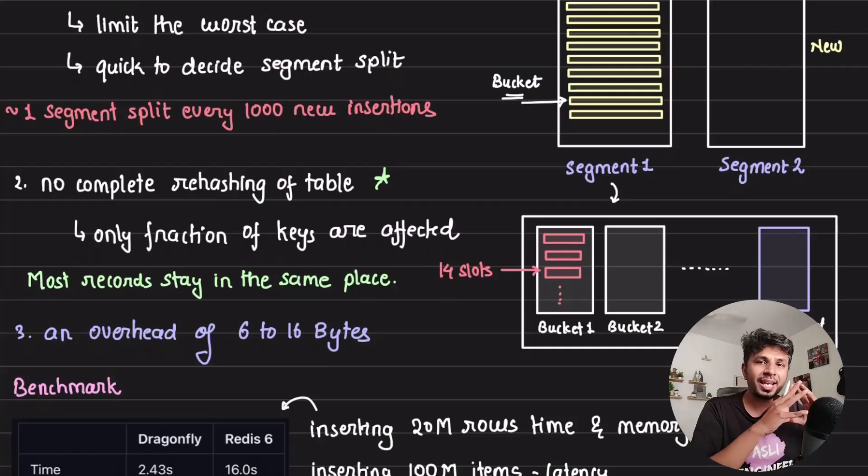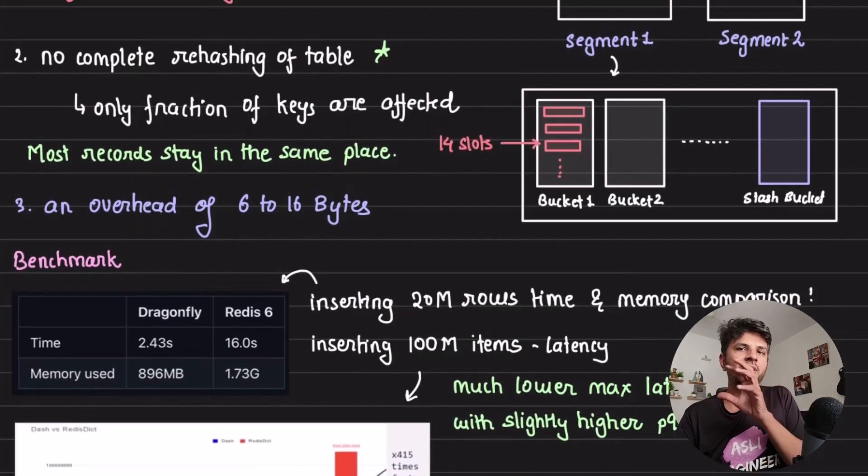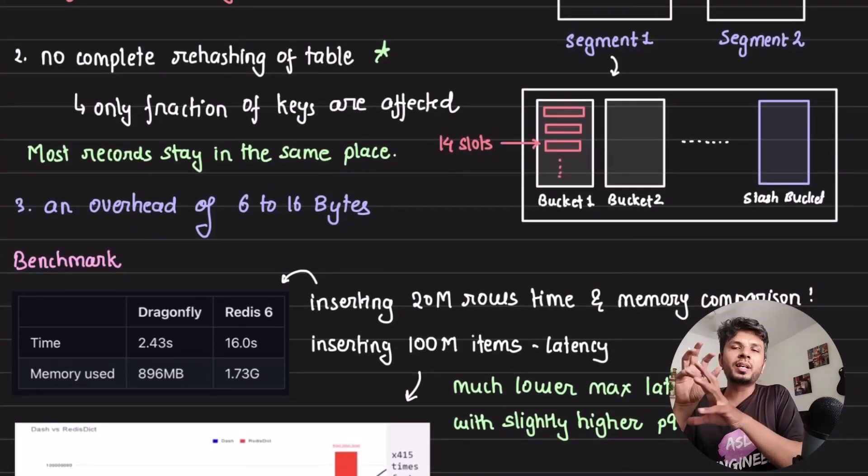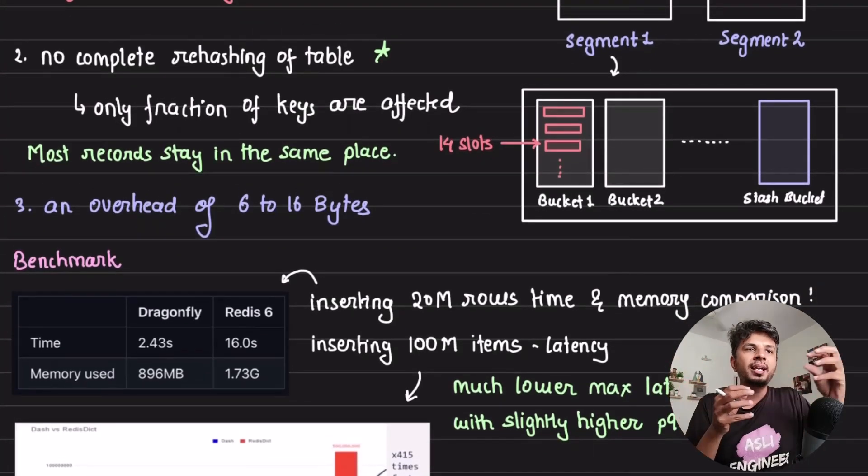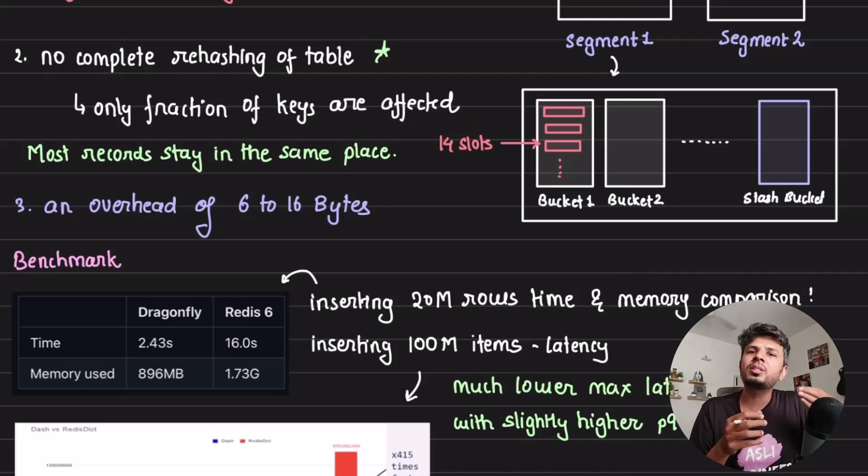Now here, only the segment that is split is getting affected. That's the best part. So most elements in dash table implementation stay at the same place, while in a classic hash table implementation, they are moved. This is where you get better throughput and the overhead of dash table is just 6 to 16 bytes.